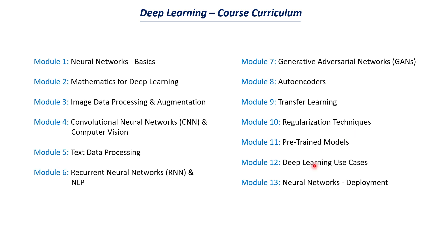The twelfth module will be on deep learning use cases. I will be posting use cases of deep learning not just after completing 11 modules, but also while we are working on these modules, so that we have conceptual learning as well as practical knowledge of how to use deep learning. Module 13 will be on neural network deployment — how you can train a neural network and deploy it for a web app or for production.